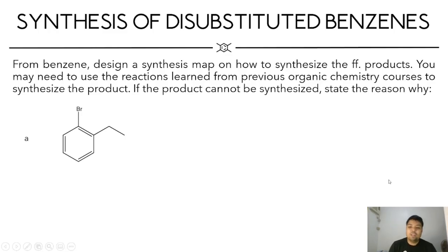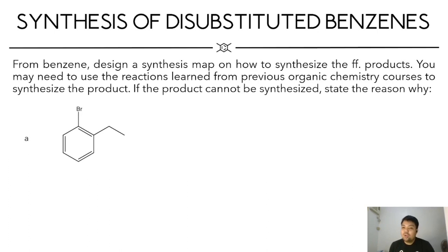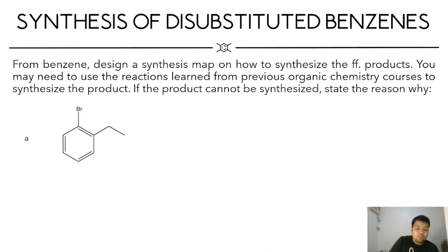Let's say we're given this molecule and we have to synthesize it using benzene as a starting material. We can use any reaction that we have at our disposal that we have learned so far in your previous chemistry courses and also in electrophilic aromatic substitution. The first thing that you need to consider is the directing effects of each of these substituents that you're going to attach in your aromatic ring. We start at our final product which is this one here.